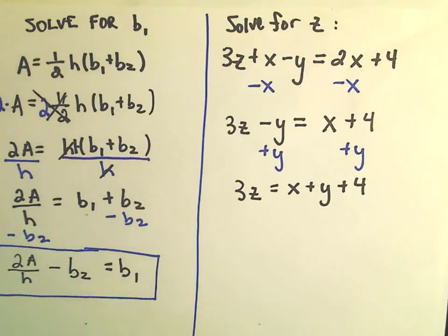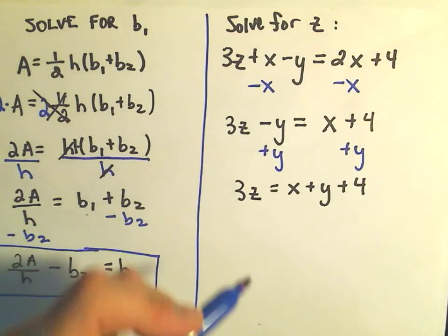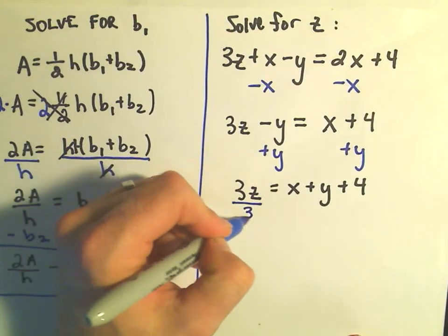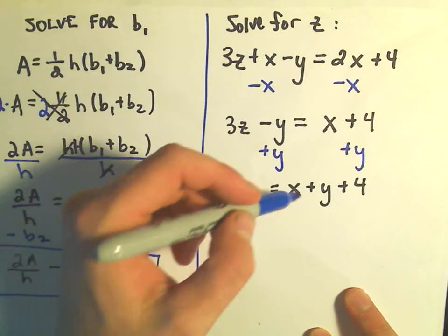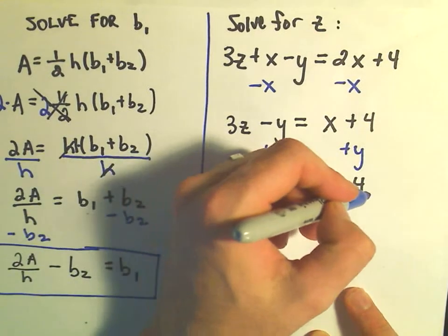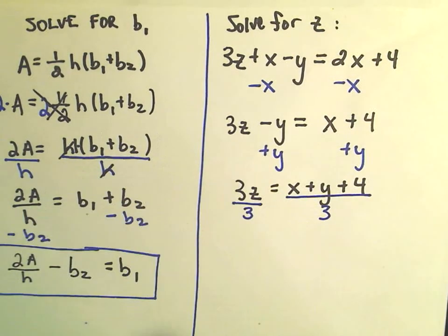And again, the last thing we want to do now is get the z all by itself. So since we're multiplying by 3, we can divide by 3, or equivalently multiply by one-third. So you have to divide everything on the right side by 3 as well.